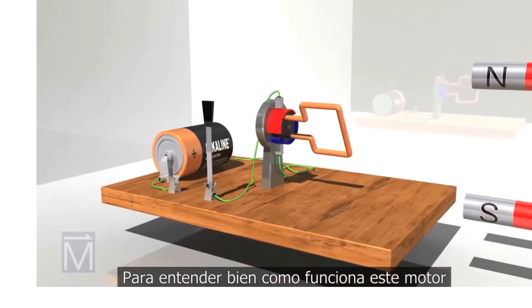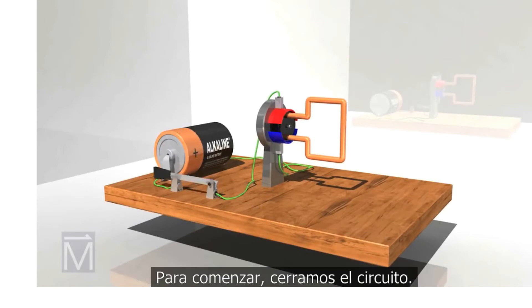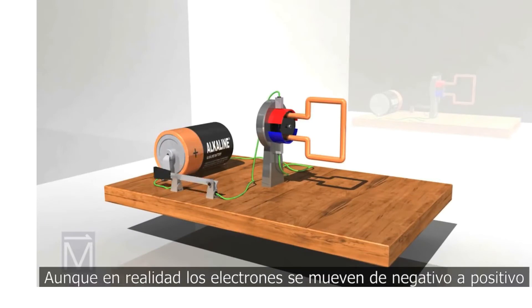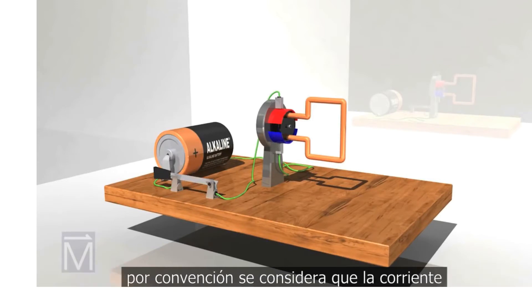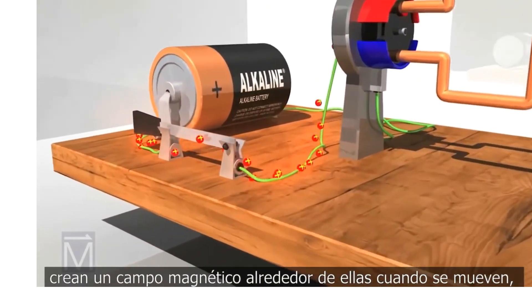To understand this better, we'll look closely at these forces and how they interact. First, we activate this circuit. While electrons actually run from negative to positive, the convention is to think of electricity going from positive to negative. The charged particles in the electrical current create a magnetic field around them